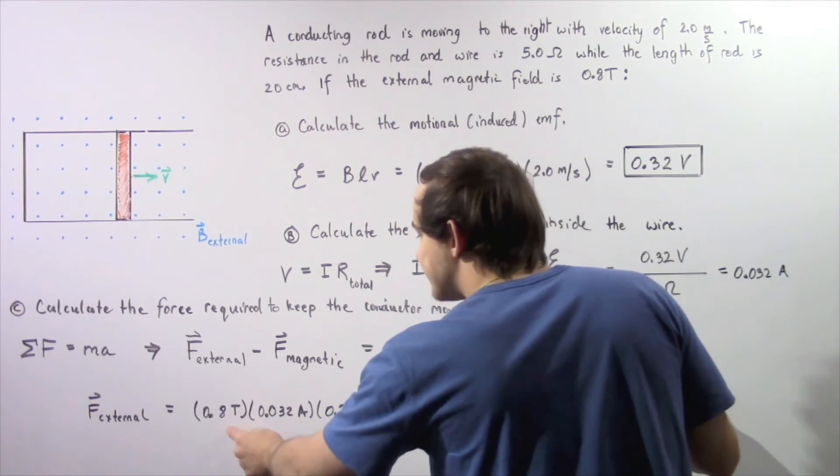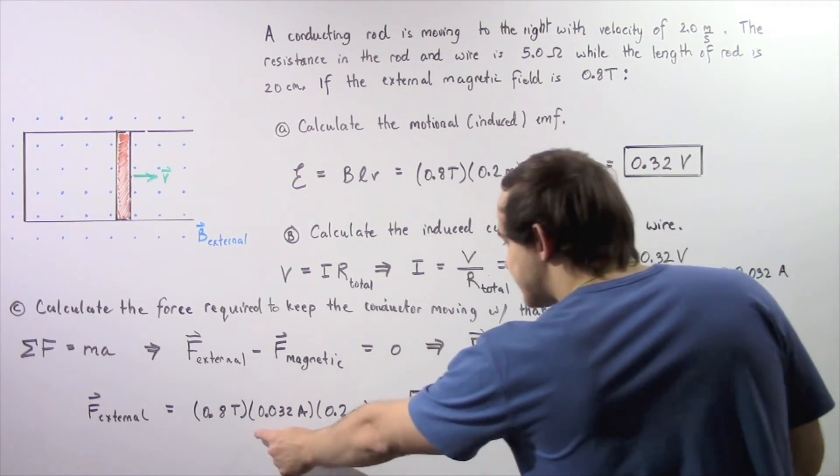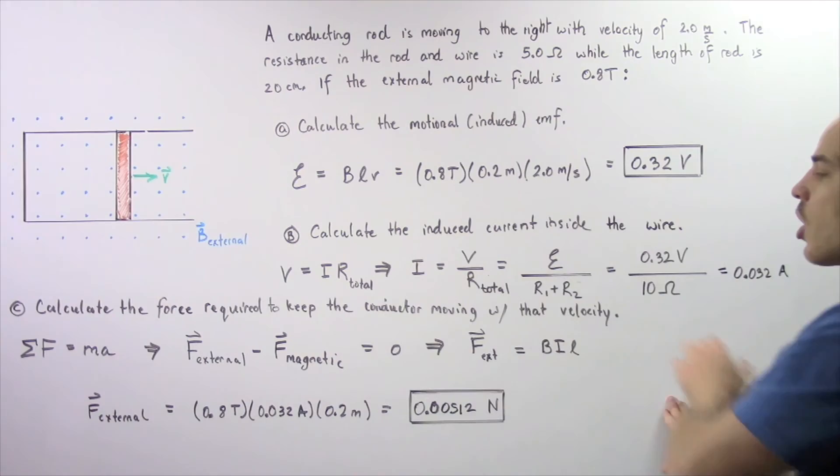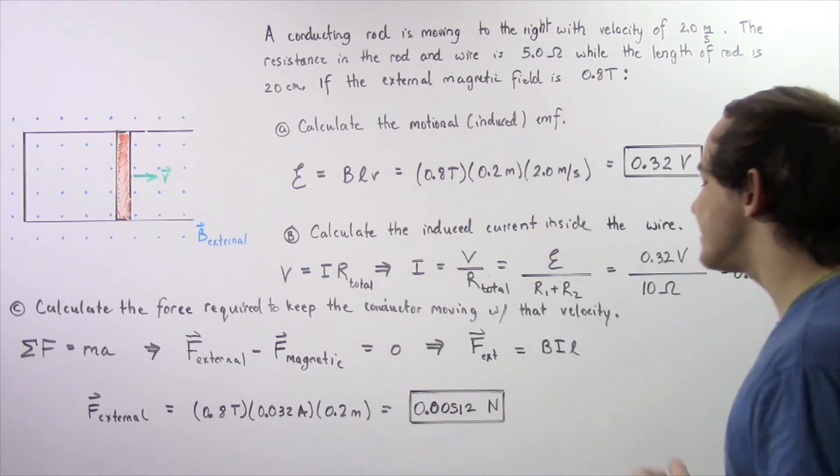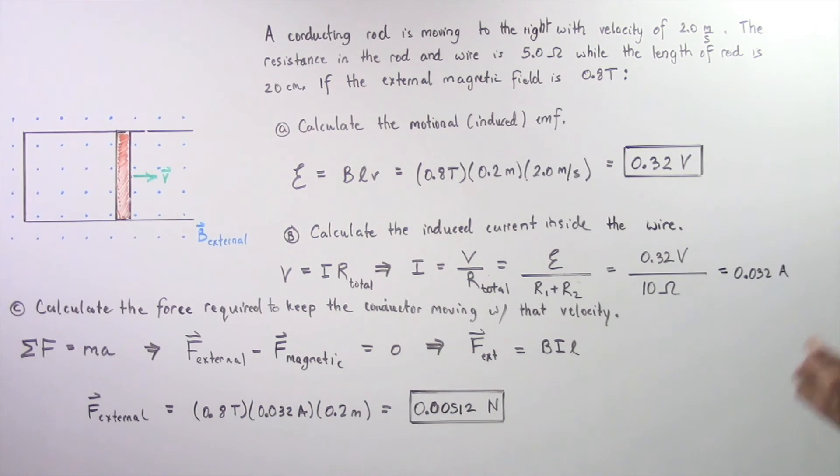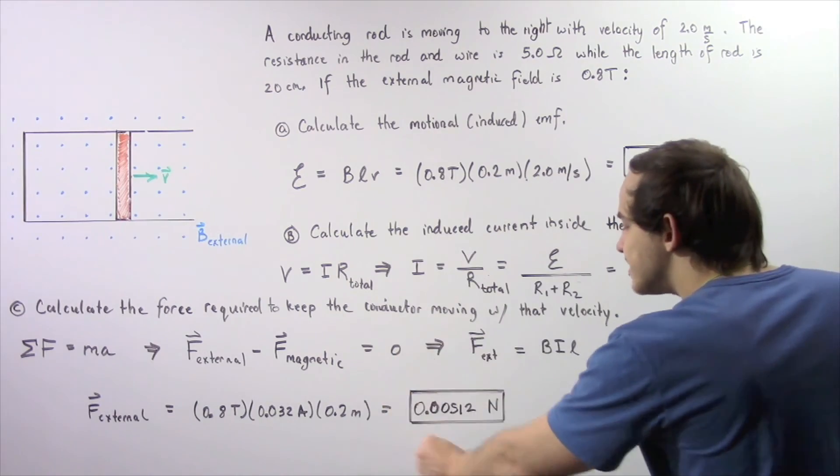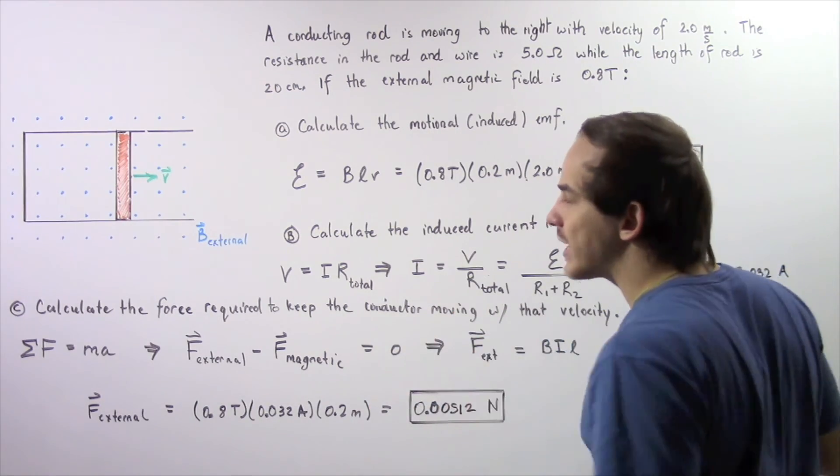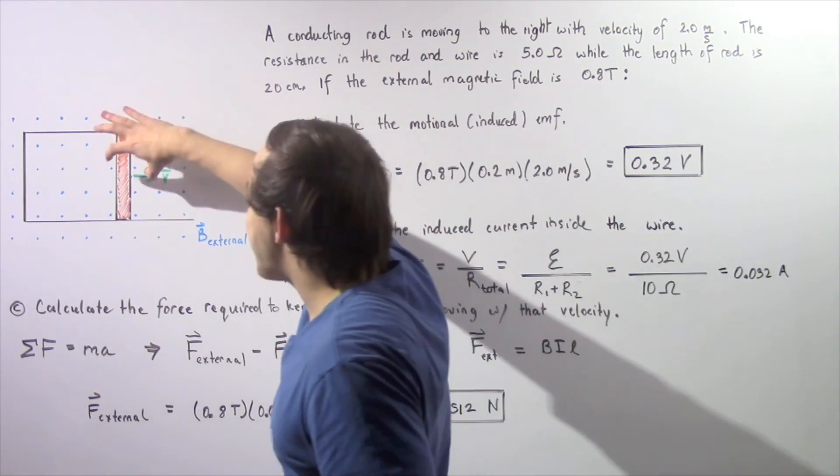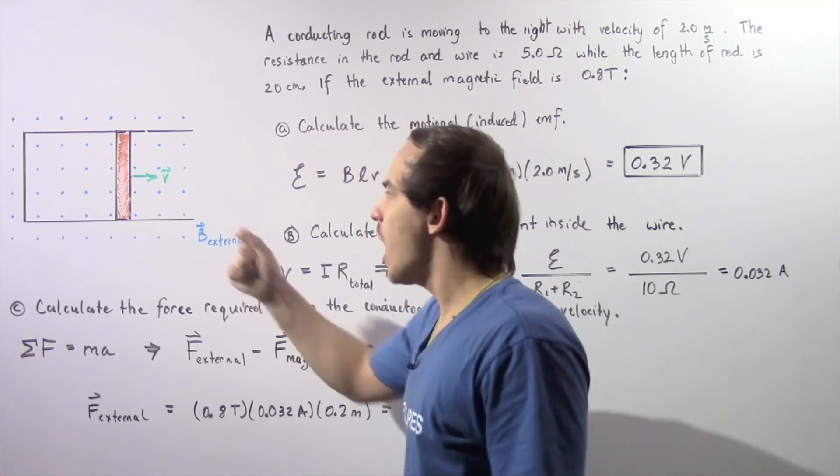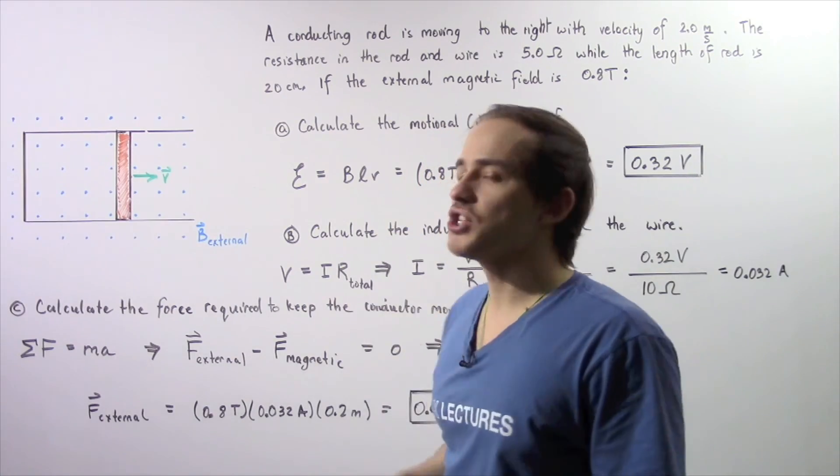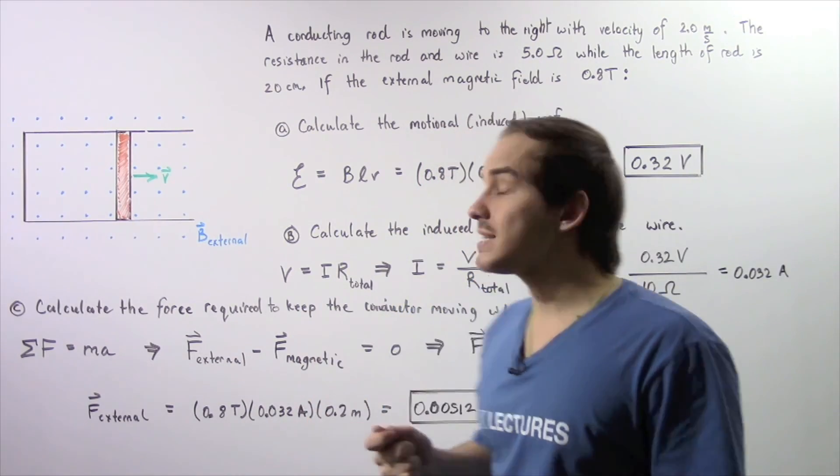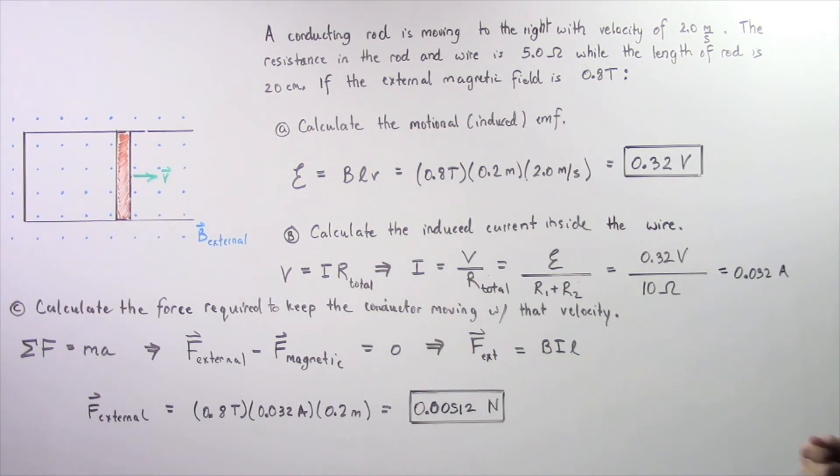So 0.8 teslas multiplied by 0.032 amps, found in part B, multiplied by the length of 0.2 meters, gives us a force of 0.00512 newtons. This is the magnitude of our external force that acts on our conducting rod to move it in a positive direction along the x-axis with a constant velocity of 2 meters per second.